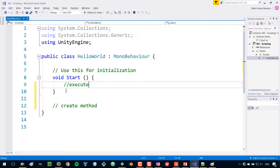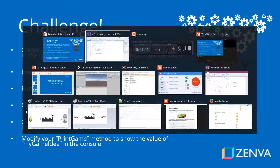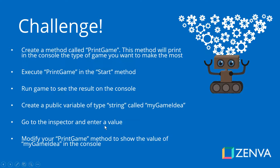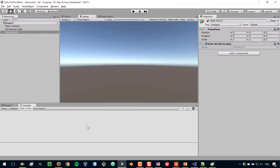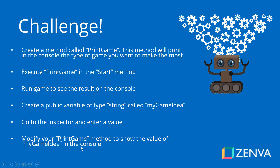Once you've completed part one, part two consists of creating a public variable of type string called myGameIdea. Place that public variable in your script, then go to the inspector and enter a value for that game idea — it will appear on the script component under the game object. Then modify your printGame method so that instead of printing a hard-coded string, it prints whatever you've entered in the myGameIdea variable. Pause the video, try your best, and then come back to see the solution.